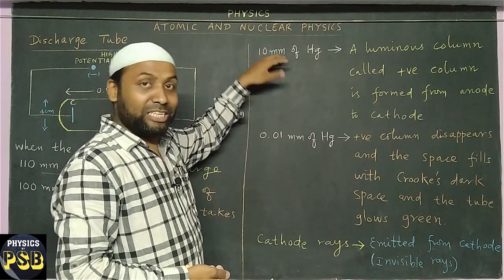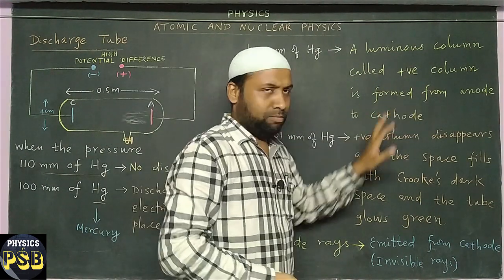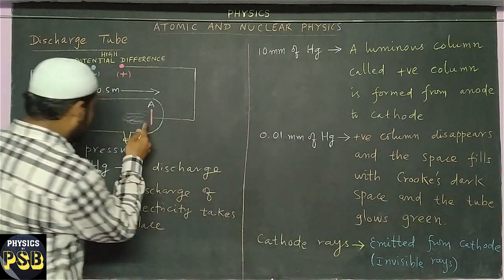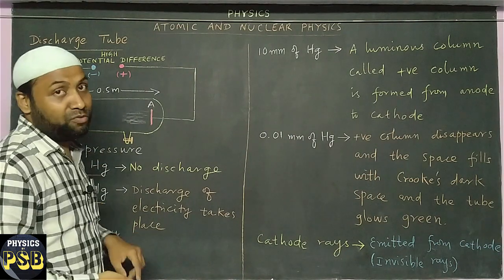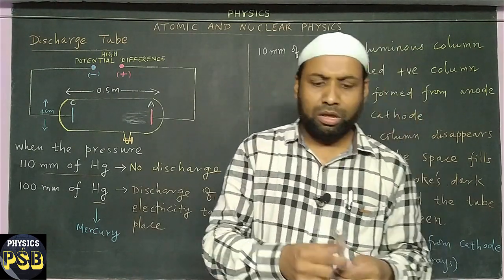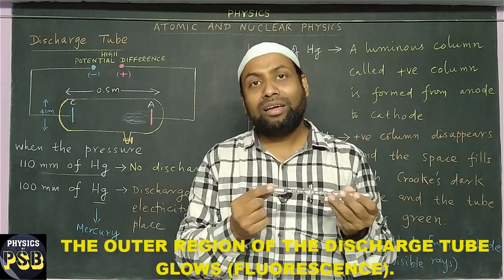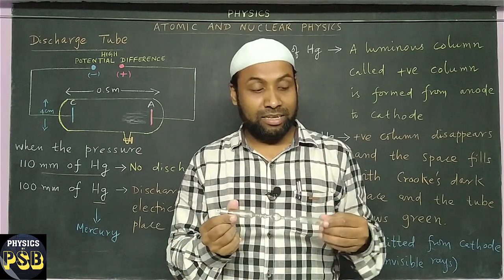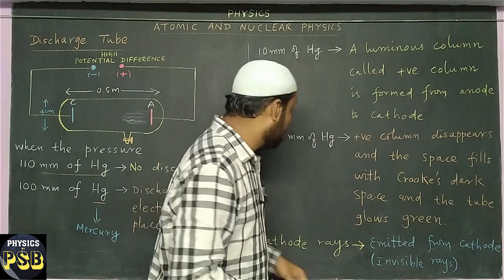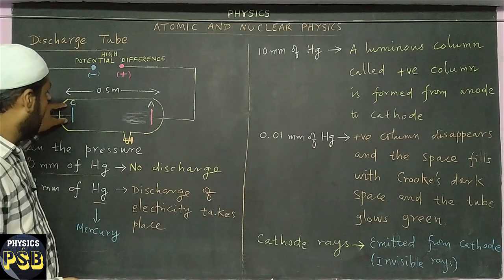When the pressure of gas is further reduced to 0.01 millimeters of mercury, the positive column which was seen at 10 millimeters of mercury disappears and vanishes. This region gets filled with a dark space called Crookes' dark space. The outer region of the glass tube emits out green light due to fluorescence, and invisible rays are emitted from the cathode — we call such rays cathode rays, as they are emitted from the cathode of the tube.